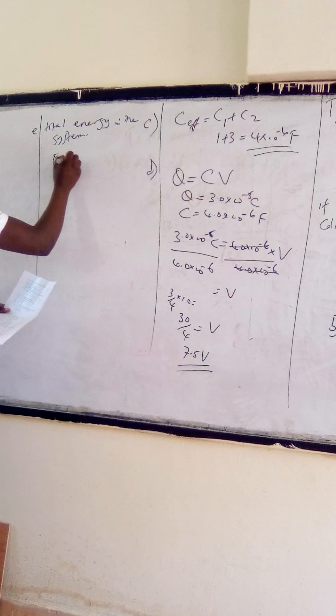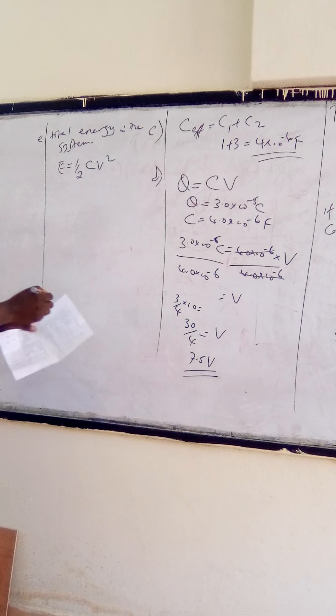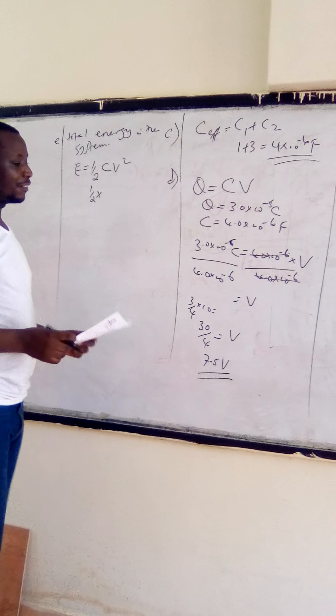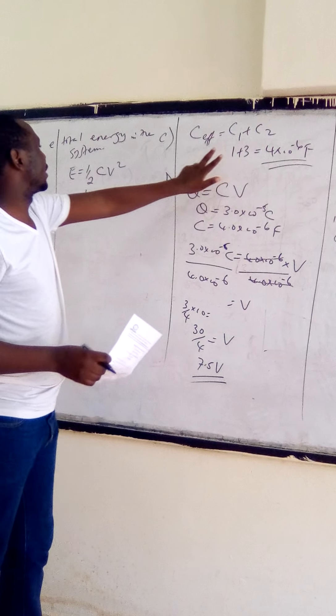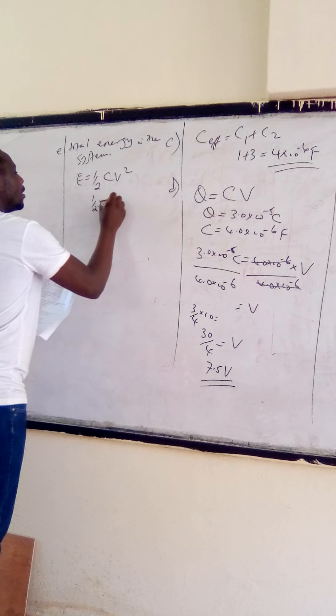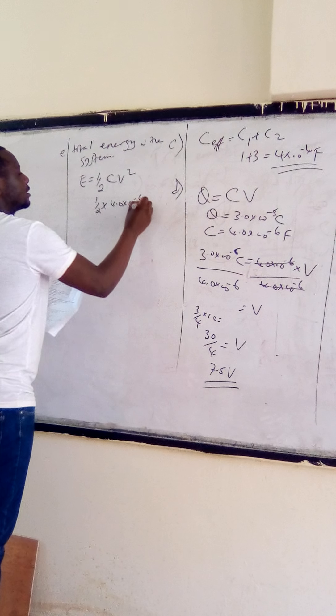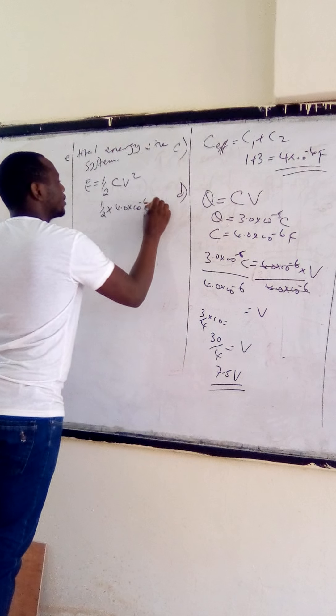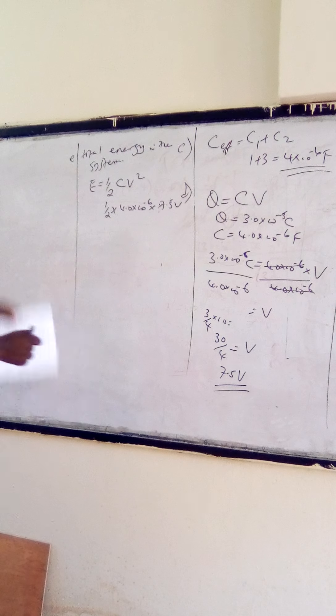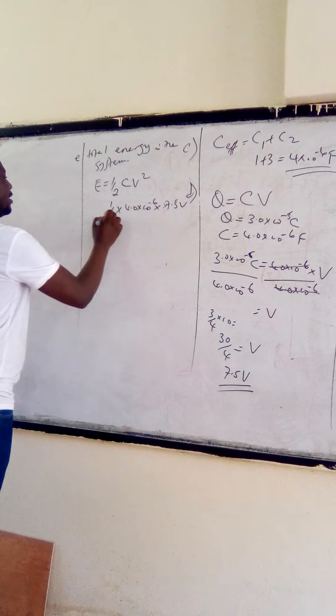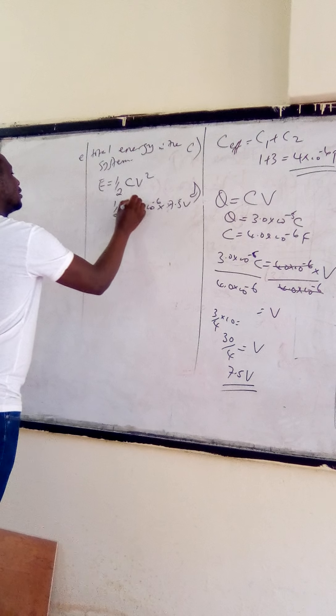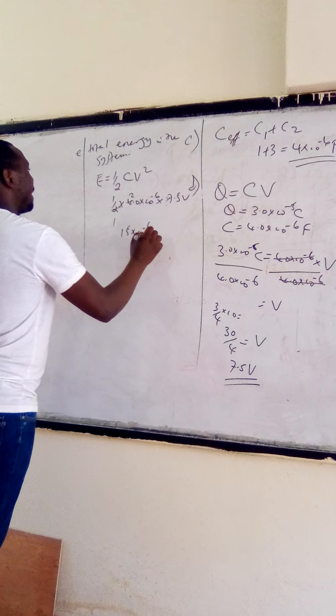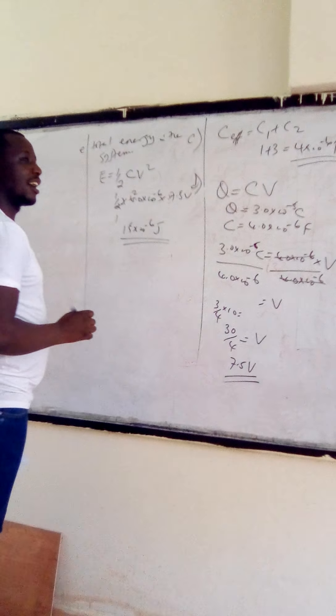For us to get total energy, we say that energy is given by half CV squared. In this case, we have a half multiplied by C effective, the effective capacitance obtained in part C, which is 4.0 times 10 power negative 6, multiplied by V squared. From there, 1 by 2 gives us 1.5 times 10 power negative 4 joules, and that is our solution.